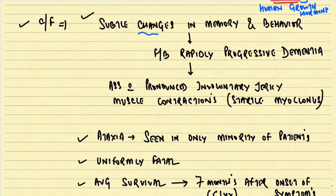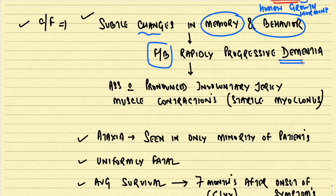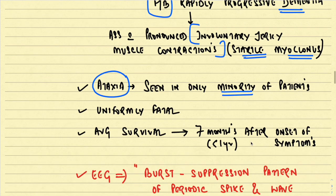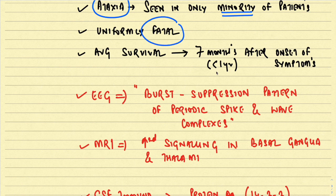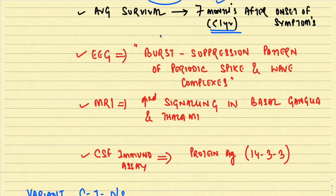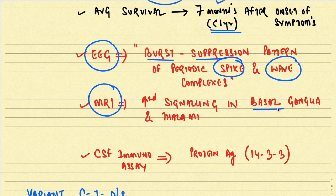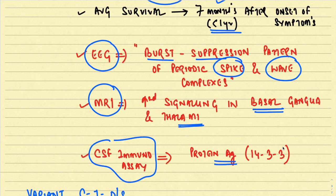Clinically, patients present with subtle changes in memory and behavior, rapidly followed by progressive dementia, and pronounced involuntary jerky muscle contractions called startle myoclonus. Ataxia occurs with cerebellar involvement in a minority of patients. This disease is uniformly fatal with average survival of less than one year — around seven months. On EEG, a characteristic burst suppression pattern of periodic spike-and-wave complex is seen. MRI shows increased signaling in the basal ganglia and thalamus. CSF immunoassay demonstrates protein antigens labeled 14-3-3.